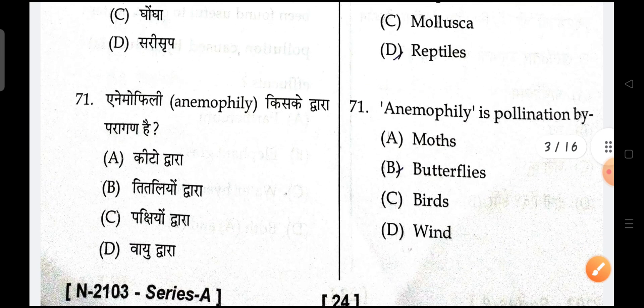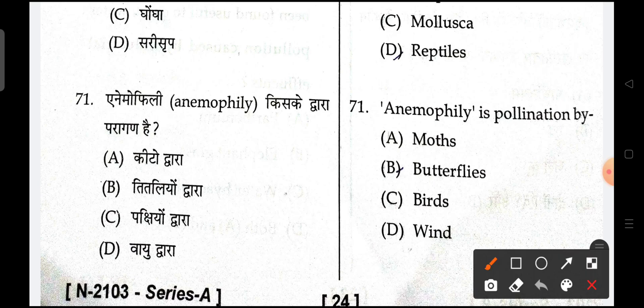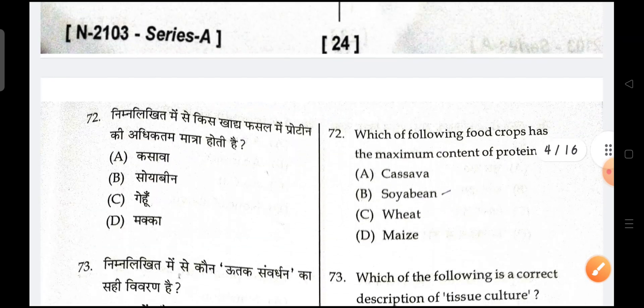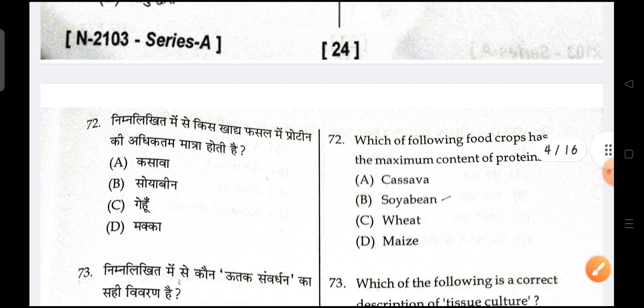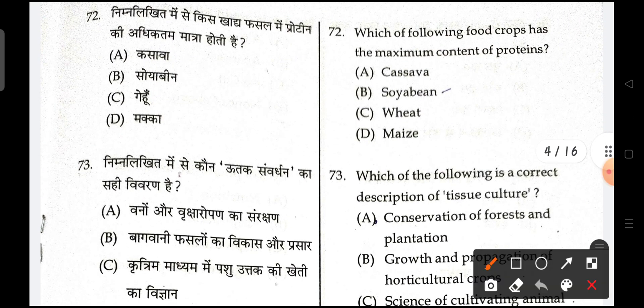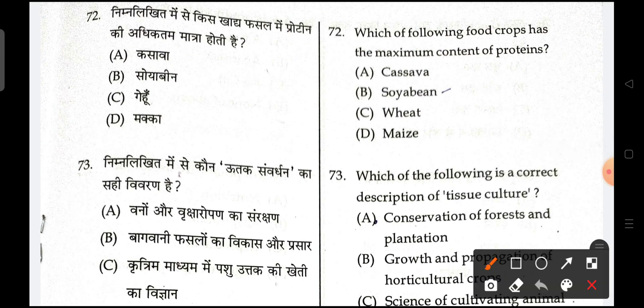The types of vertebrate animals which creep and crawl are your reptiles. Next is, anemophily is pollination by wind. Next is, which of the following food crops has the maximum content of protein? Bean is the correct answer.